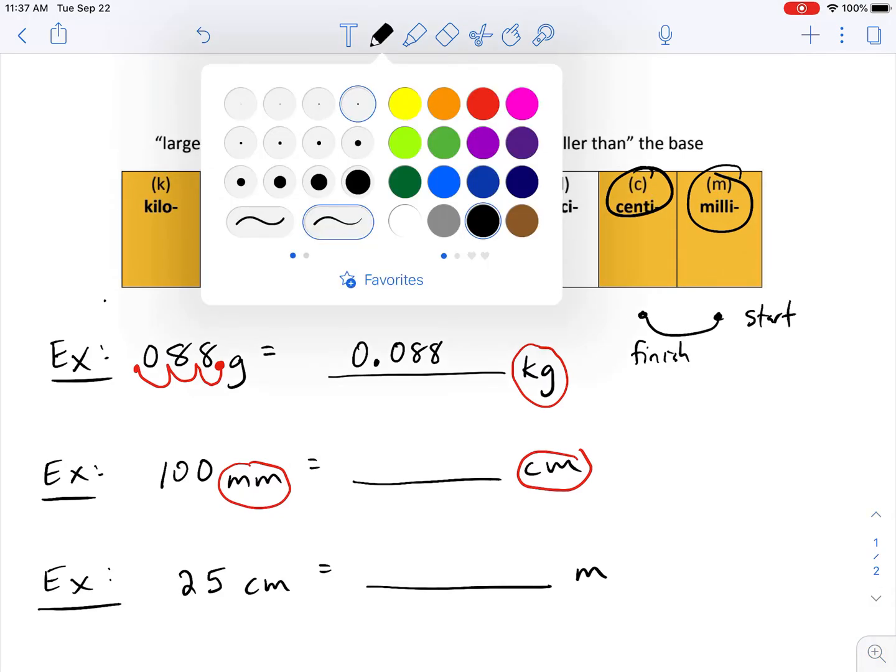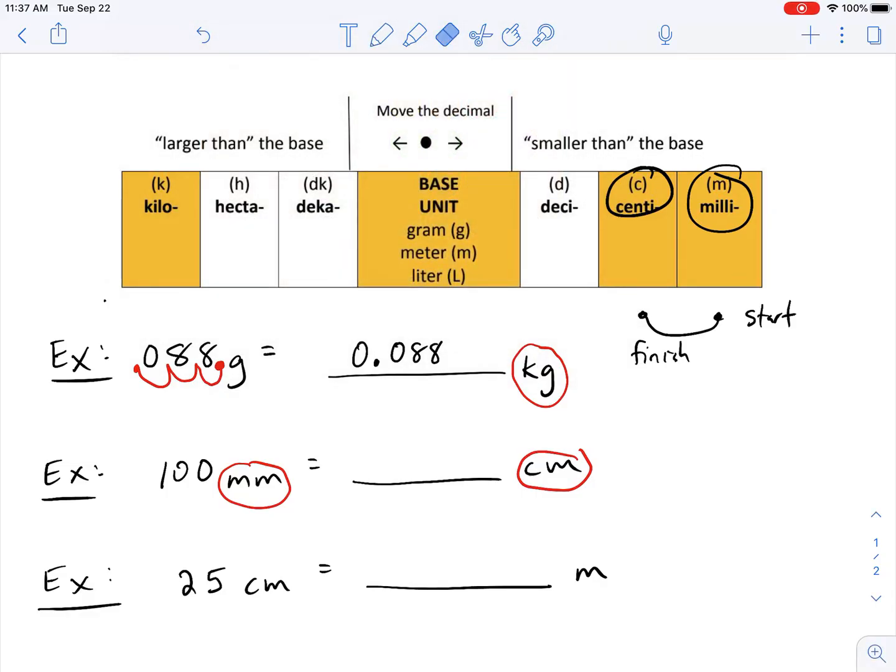So I'm going to take that decimal, which exists right here, and I'm going to move it over one place to the left. And then I'm going to rewrite as 10.0 centimeters.